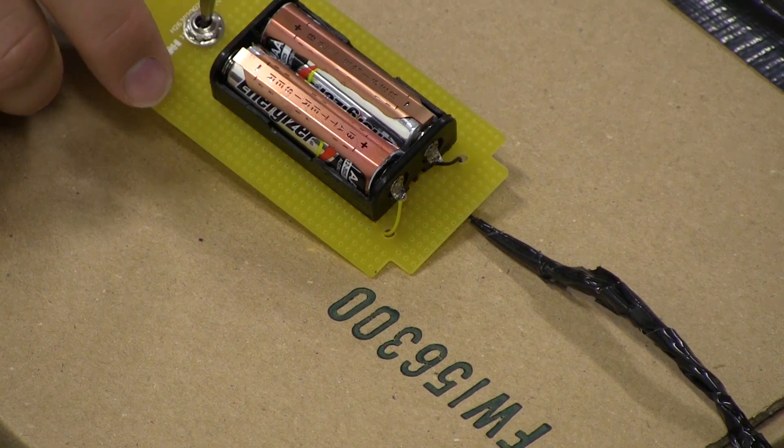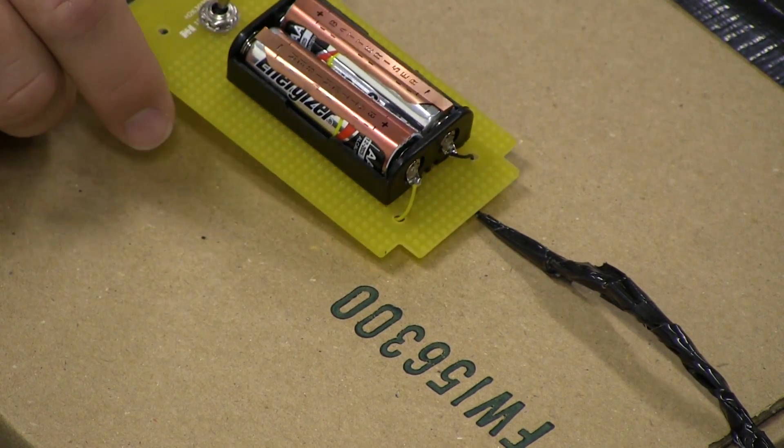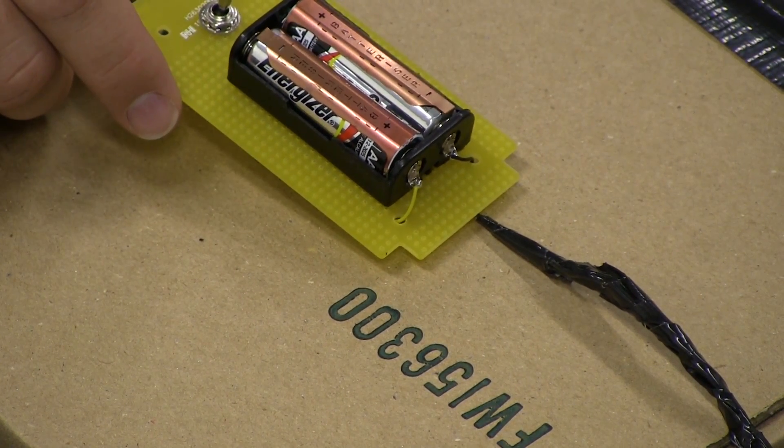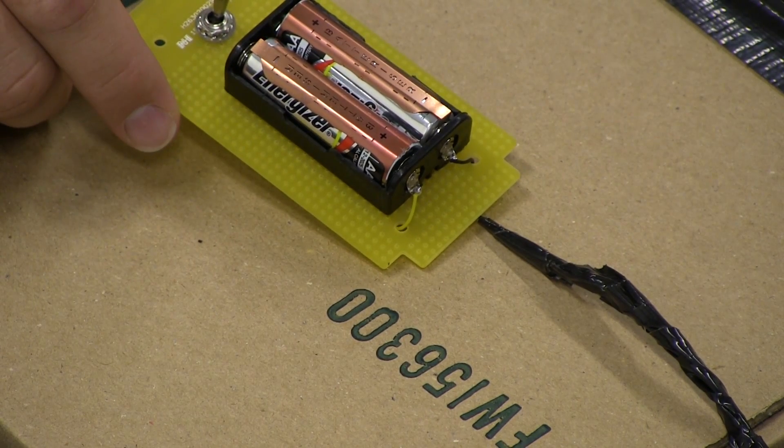Now we repeat the same test with Batterizer. This time we have the two fresh AA batteries inside two Batterizers.